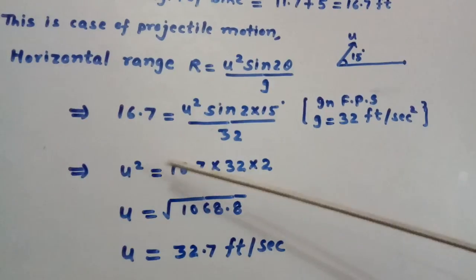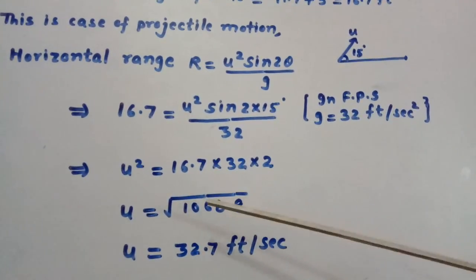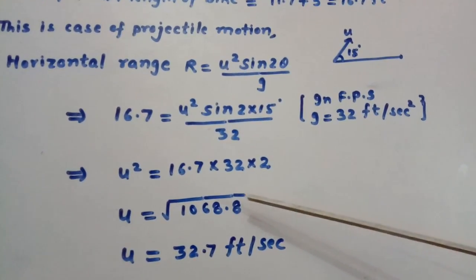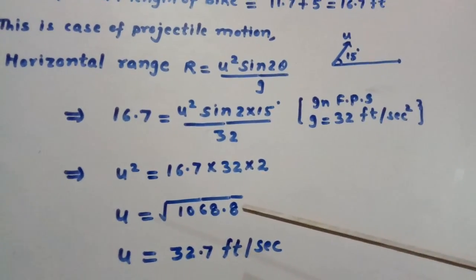This simplifies to U squared equals 16.7 times 32 times 2, or U equals square root of 1068.8, which gives 32.7 feet per second. This is our answer. Thank you.